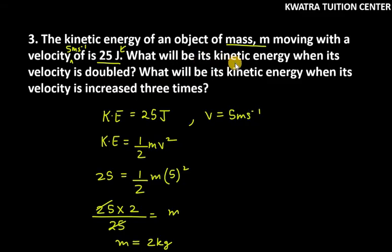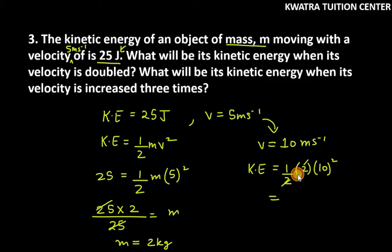Now, they have told you what will be its kinetic energy when its velocity is doubled. Velocity is doubled. You have done double. What was it before? 5. 5 is double. 10. So, kinetic energy. It is half mv square. How much is m? 2. How much is v? 10 square. 2 from 2 cancel. You get 10 square. It is 100. 100 Joules.